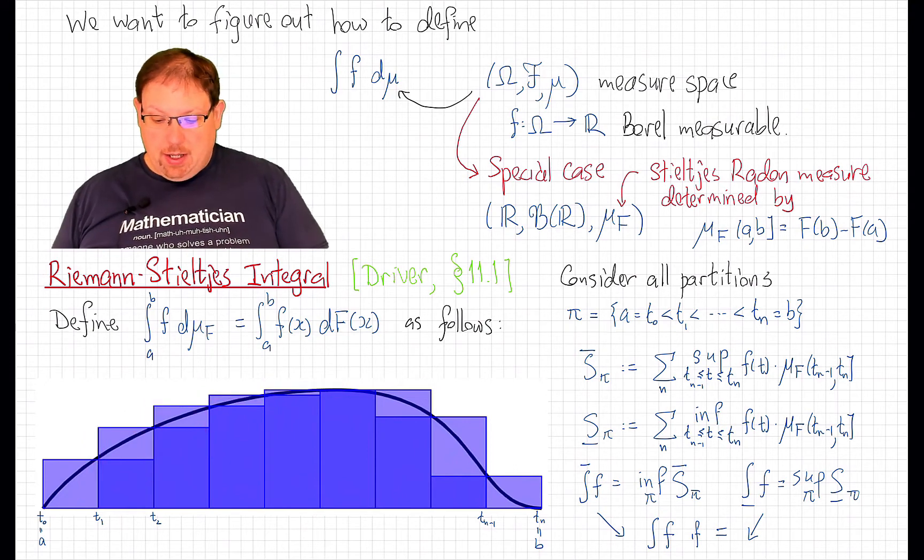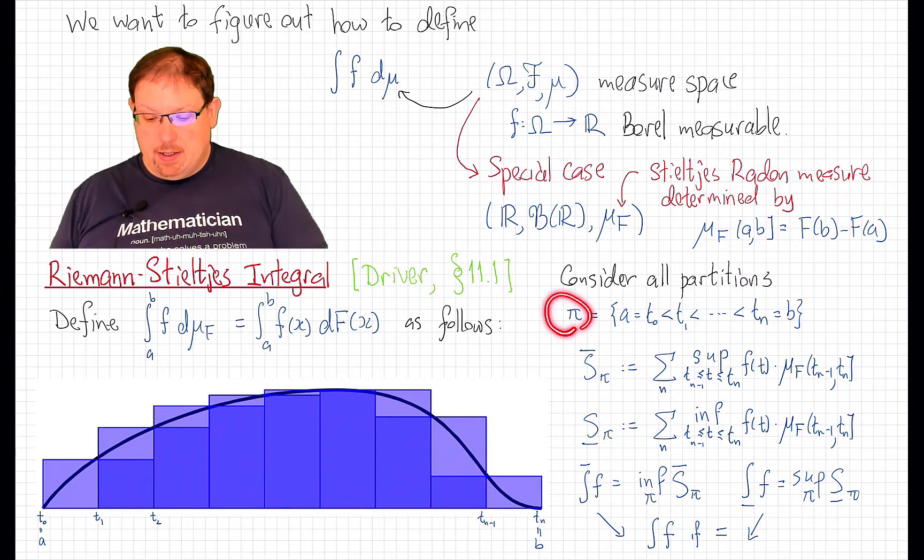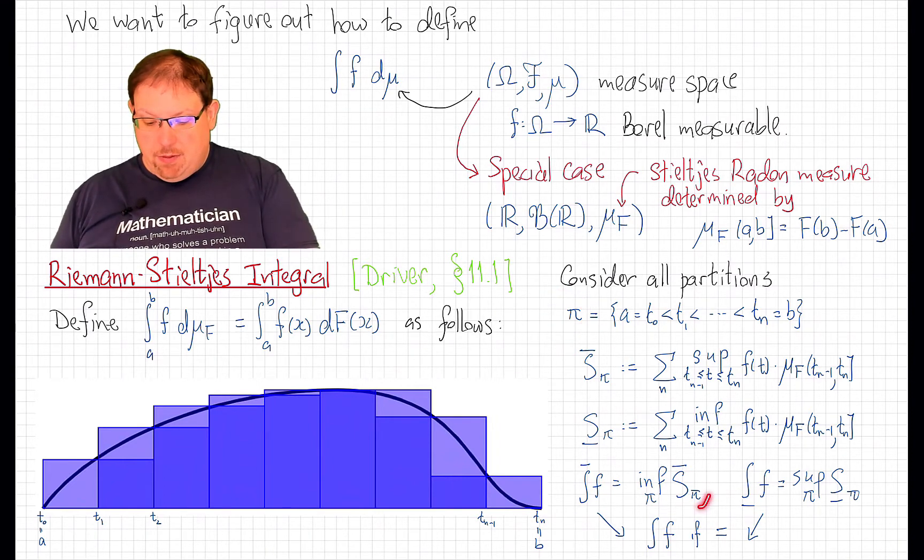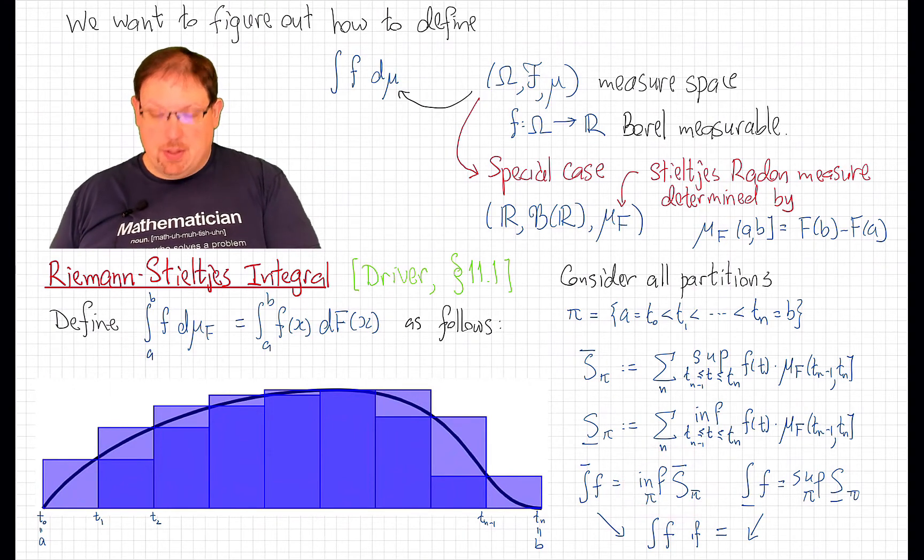We do that for each possible partition π of the domain. And then, we take the infimum over all partitions of the upper sums.